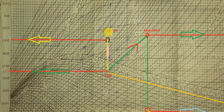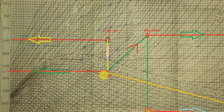Next, the steam expands isentropically from 15 bar and 250 degree Celsius. Since it is an isentropic expansion, we draw a straight vertical line downward from point 1 to the 4 bar constant pressure line. Moving horizontally to the left, we note down the H2 value. This gives us the enthalpy at point 2.